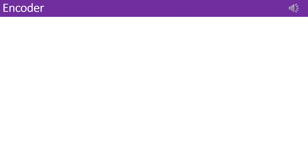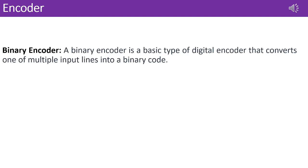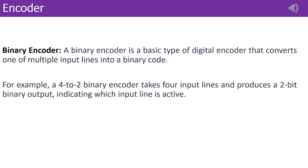A binary encoder is a fundamental digital encoder that translates one of several input lines into a binary code. For instance, a 4-to-2 binary encoder accepts 4 input lines and generates a 2-bit binary output, signifying the active input line.